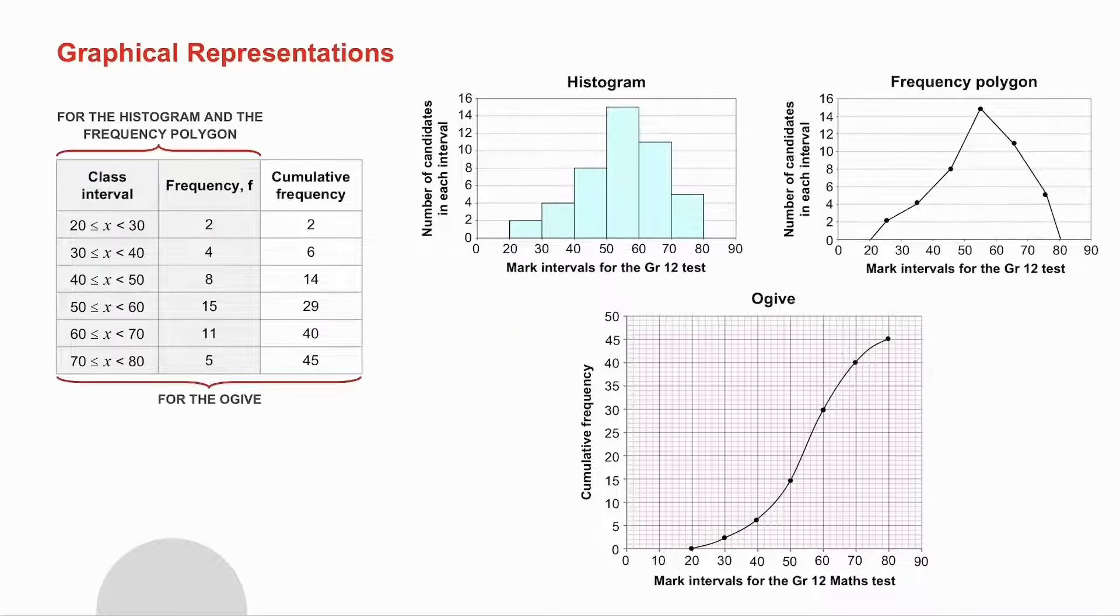For all three of these graphs we will use class intervals. For the histogram and the frequency polygon we use the frequency. For the ogive we use the cumulative frequency. With the histogram you plot everything as a bar and the bars go right up next to each other.